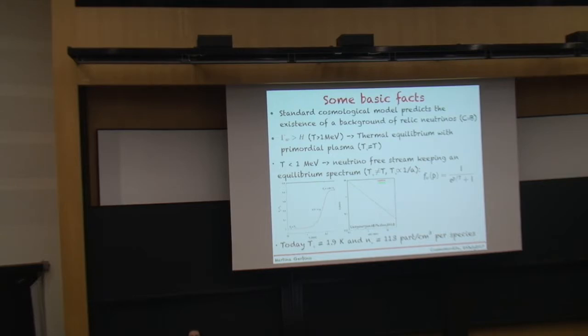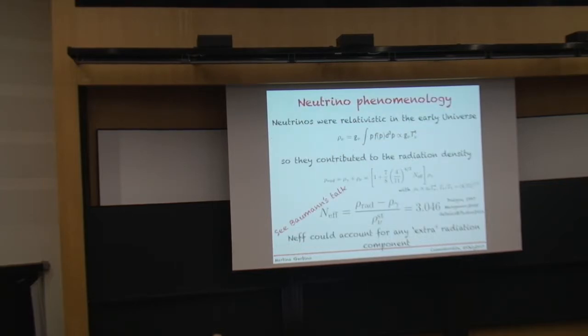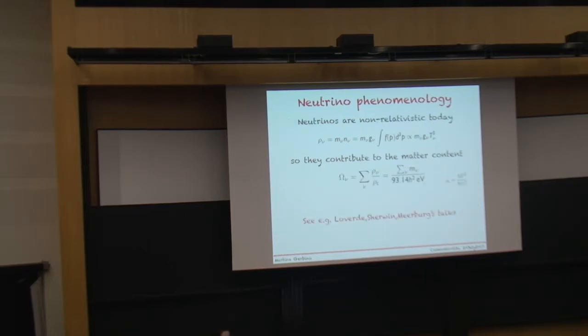From laboratory experiments, we know that we are dealing with EV or sub-EV neutrinos, so they were fully relativistic in the early universe, and their contribution can be parameterised in terms of the N effective parameters. But in the late-time universe, neutrinos became fully non-relativistic, so their contribution to the energy content can be parameterised through the sum of their masses.